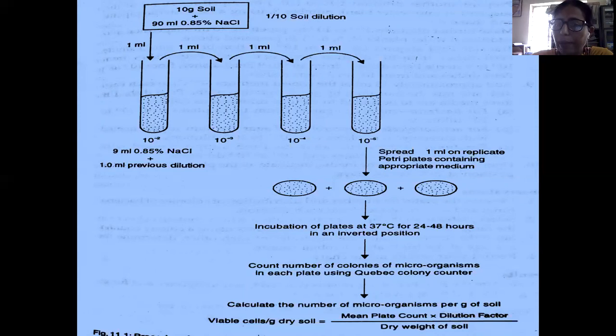So 10 raised to power minus 5 and minus 6 dilutions are taken and plated in 3 plates so that replicas are maintained. Incubate the plates at 37 degrees Celsius for 24 to 48 hours in an inverted position. After incubation we count the colonies and calculate the number of organisms per gram of soil.